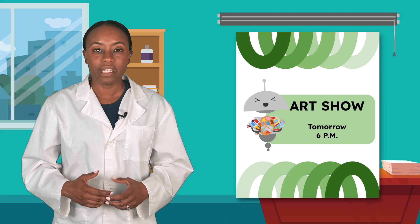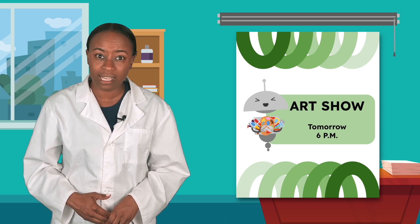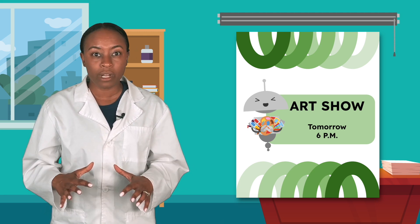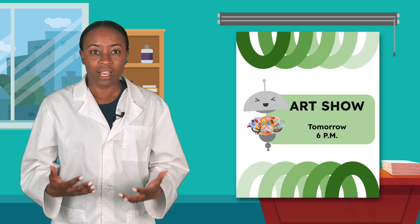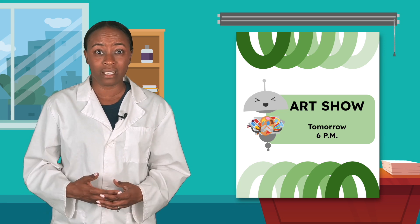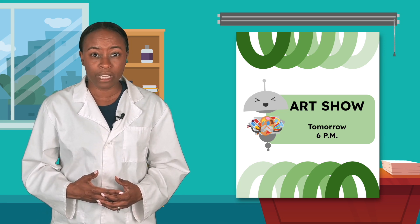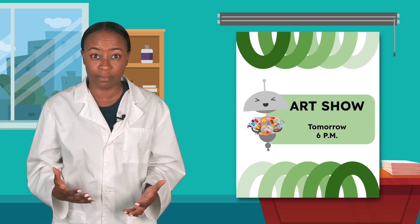Hello again, scientists! I'm so excited. The big art show I've been preparing for is tomorrow. But I just noticed a very big problem. These flyers say the wrong time. I need to let everyone know the correct time, but I don't have a lot of time to do it. How can I get this information out to all my friends as quickly as possible?